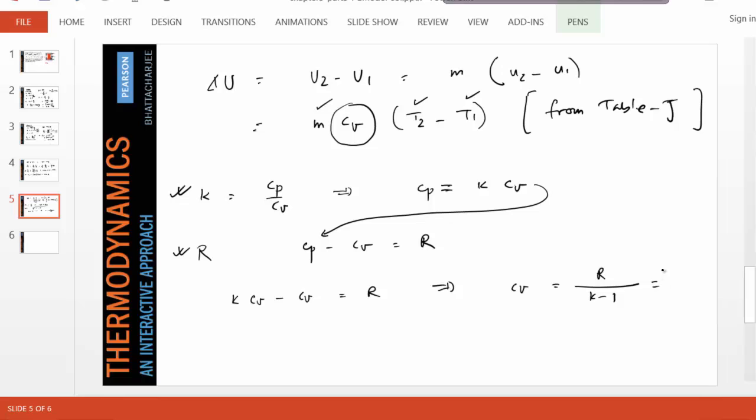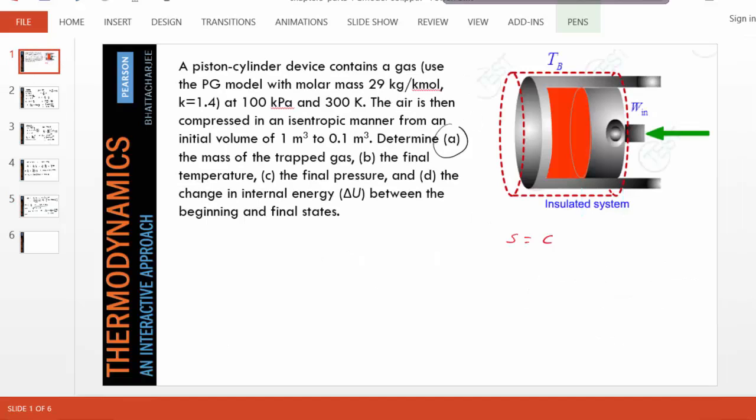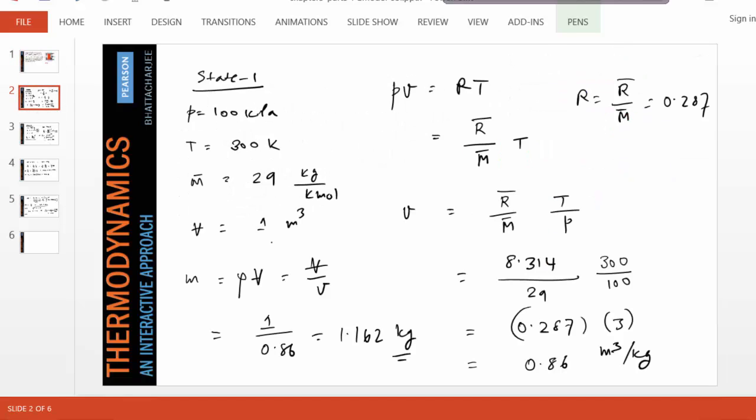Recall that we already found R as 0.287 and K is given 1.4. So that gives us a Cv value of about 0.718. Now substitute this Cv in here and we get delta U equals mass.